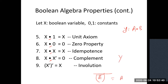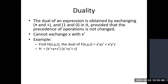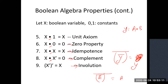Similarly, for any expression Y with Y-bar, if you take one more complement, the complement cancels and you get Y. These properties have names: involution (double complement), idempotent property, zero property, and so on. Up to property number six, all these are very basic properties which you can interpret from AND and OR operations.